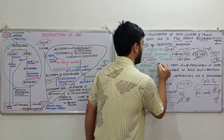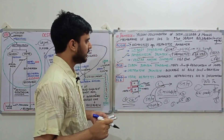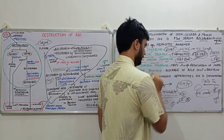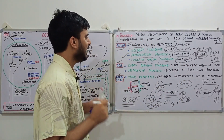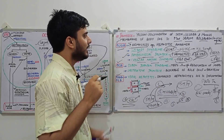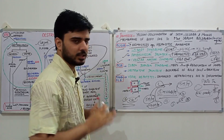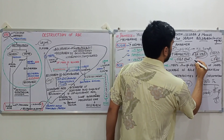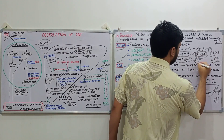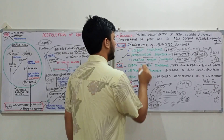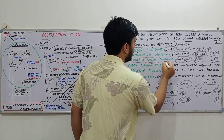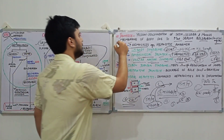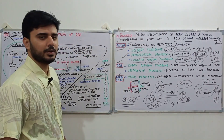Another condition is Crigler-Najjar syndrome, in which there is a complete absence of UGT. With no UGT, there is absolutely no conjugation of bilirubin. The ultimate remedy for this condition is a liver transplant, which is required to resolve Crigler-Najjar syndrome. These are the main conditions leading to increased unconjugated bilirubin in the blood.